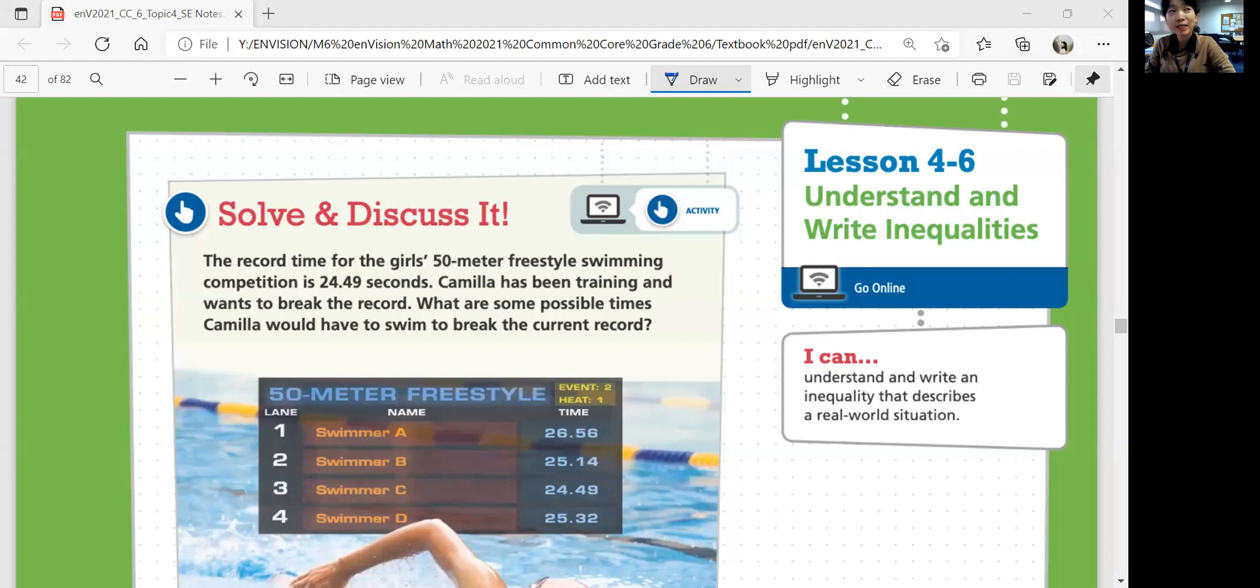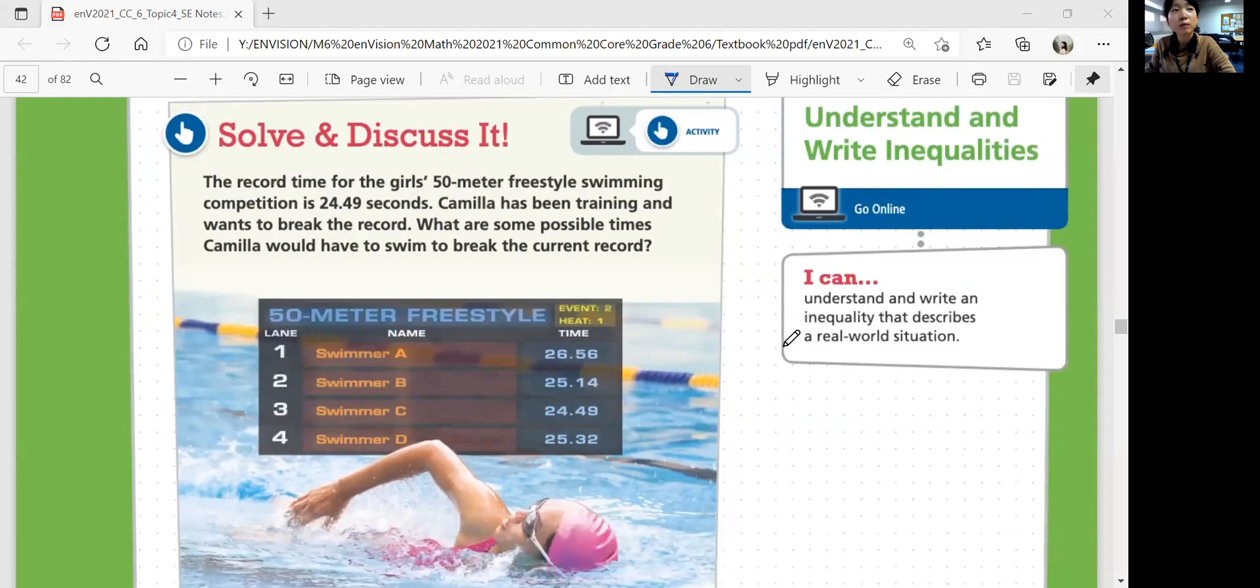Let's look at solve and discuss it. The record time for the girls' 50-meter freestyle swimming competition is 24.49 seconds. Camellia has been training and wants to break the record. What are some possible times Camellia would have to swim to break the current record?